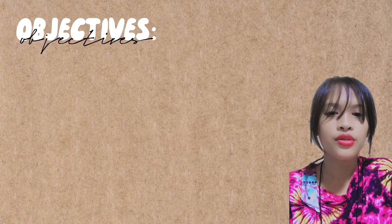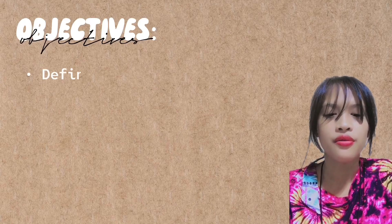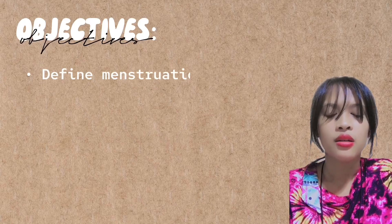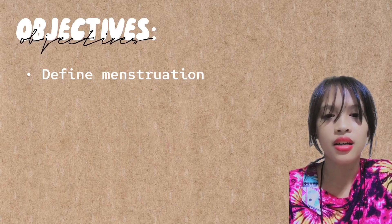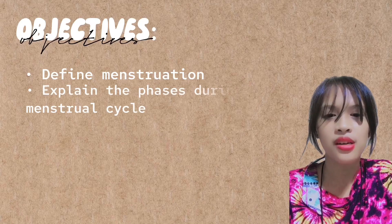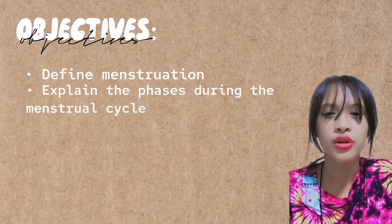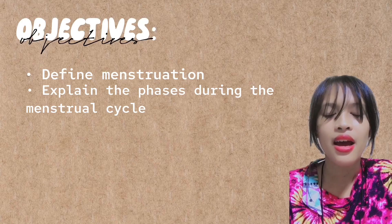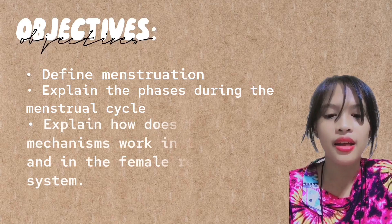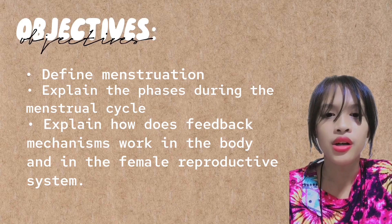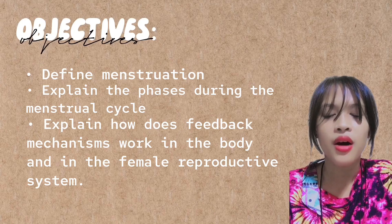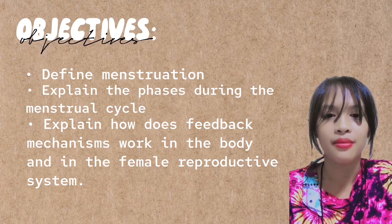Today's objectives: first, define menstruation; second, explain the phases during the menstrual cycle; and lastly, explain how those feedback mechanisms work in the body and in the female reproductive system.